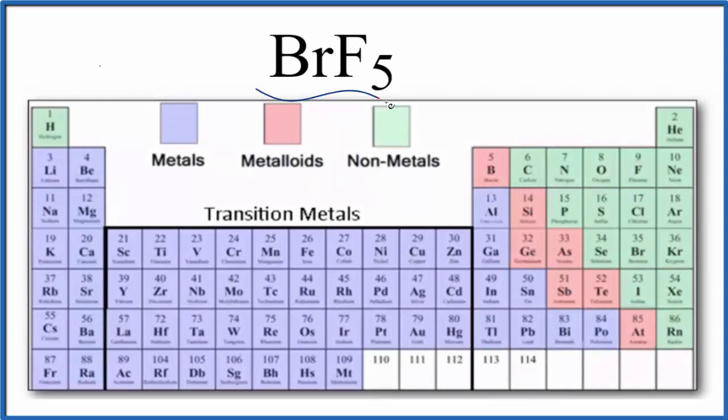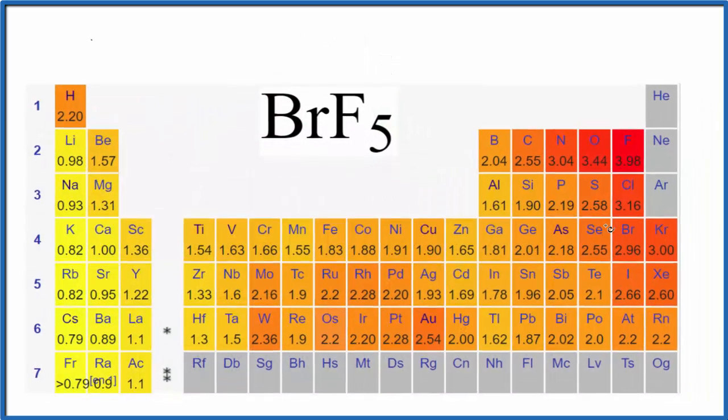Let's take a look and see whether BrF5 is an ionic or covalent compound. So the first thing we want to look at is finding bromine on the periodic table, that's right here, and then fluorine, that's right here. They're both nonmetals, so when we have two nonmetals we're pretty sure we're going to have a covalent compound, also called a molecular compound. But let's take a look at electronegativity just to be sure.